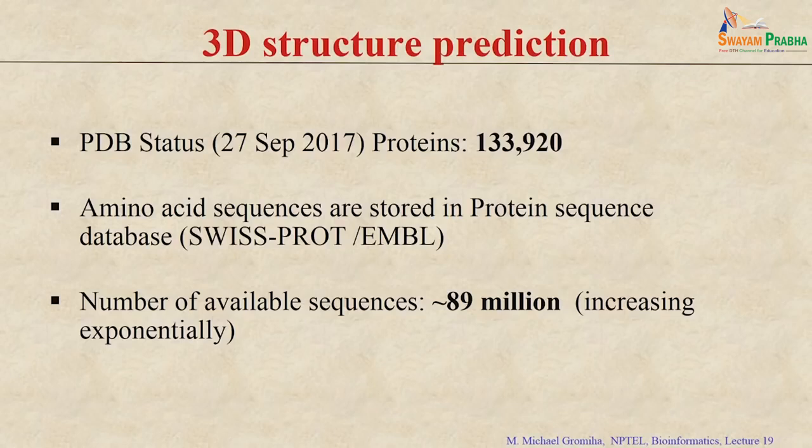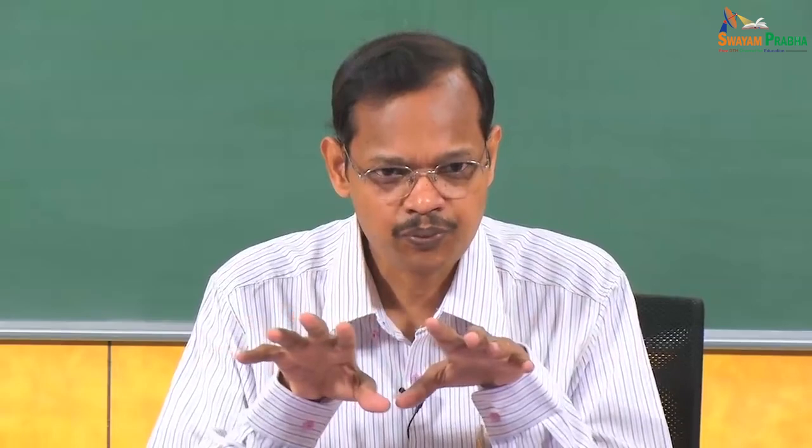On the other hand, the available protein sequence information in the UniProt database is currently about 89 million sequences. Comparing the availability of amino acid sequences and structures, available sequences are about 700-fold more than the available structures. Protein structures are very helpful in understanding function, identifying active sites, antigenic sites, and binding sites.